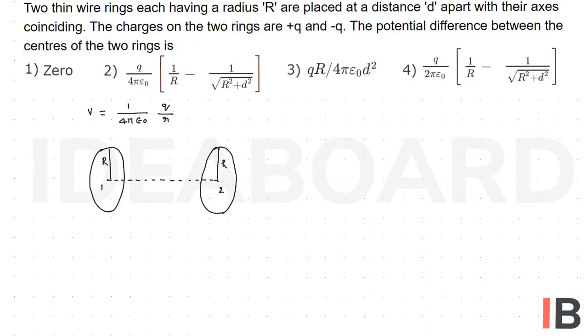So the two rings having the charge, one having +q and another having -q.